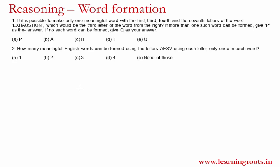We have to figure out which the first element is — the first element of 'exhaustion' is E. The third element is H. The fourth element is A. And the seventh element: first, second, third, fourth, fifth, sixth, seventh — is T. So the four letters are E, H, A, T.